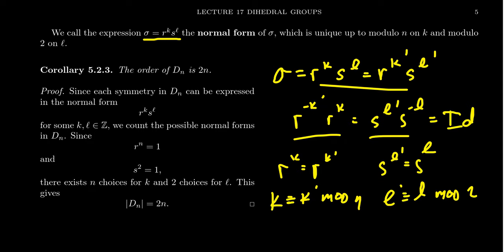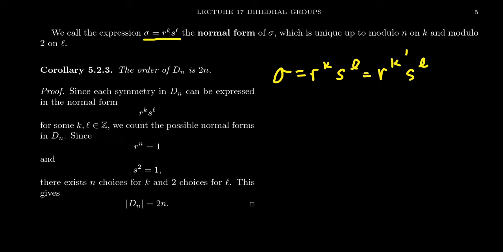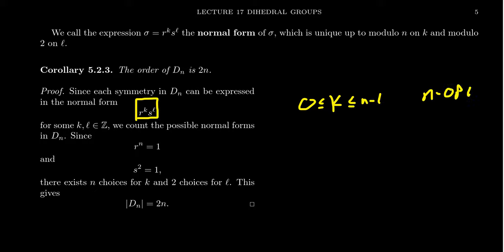The same thing's happening over here. The only way that r to the negative k prime times r to k equals the identity is that r to the k and r to the k prime were actually the same element. That doesn't mean the integers are the same, but they are going to be congruent to each other mod n, where n is the order of r. This argument gives us a way of counting the number of elements in our dihedral group dn. So dn actually has order 2n.